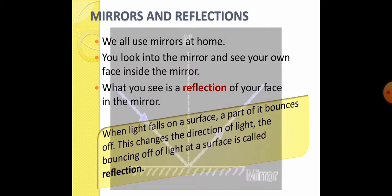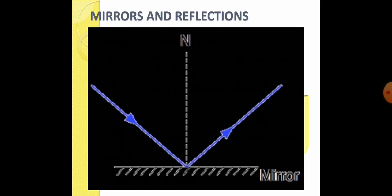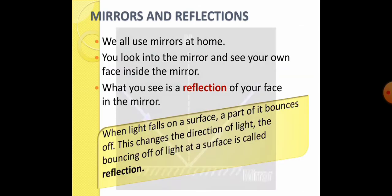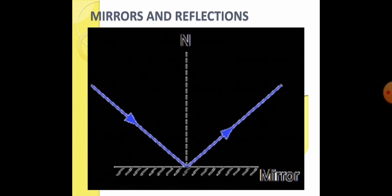Okay, jo bhi aap mirror mein dekhte ho, that is a reflection. Suppose light kisi surface ko hit karti hai, to yeh wapas bounce off karti hai. Aur isi bouncing off ko hi reflection kehte hain.